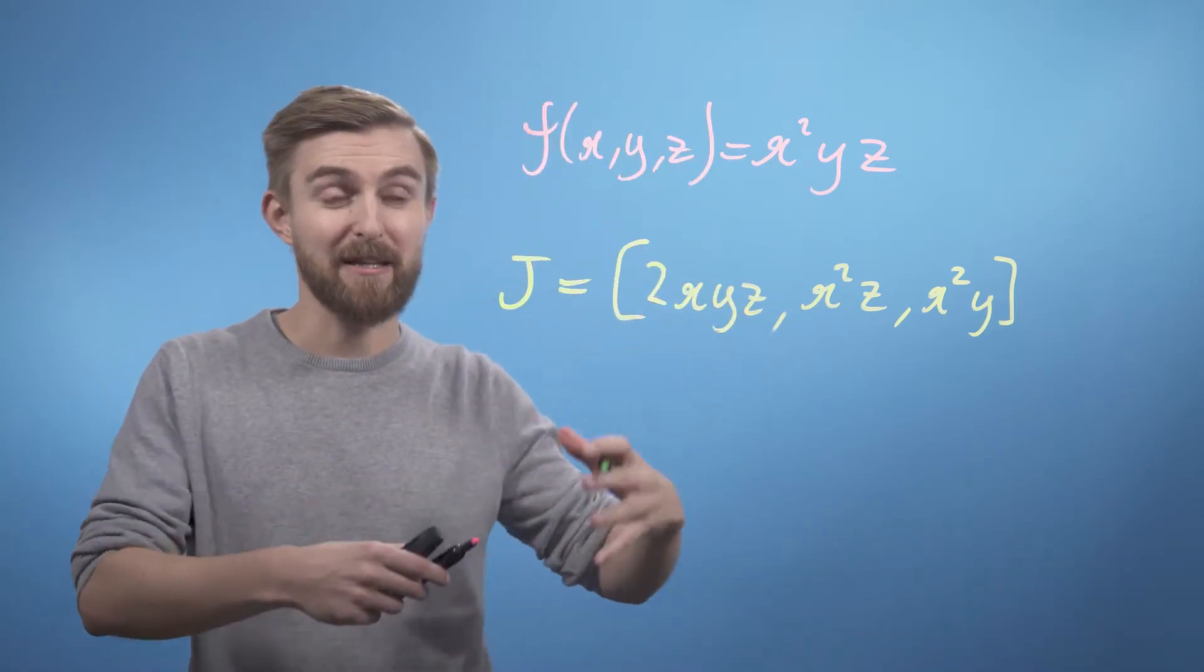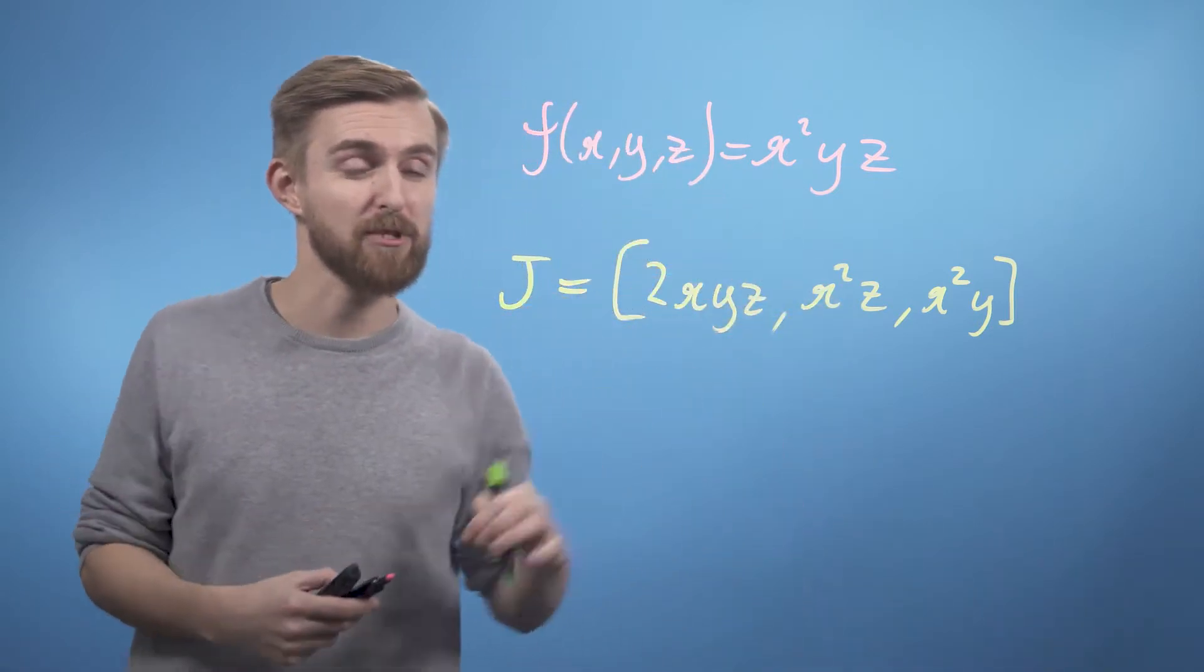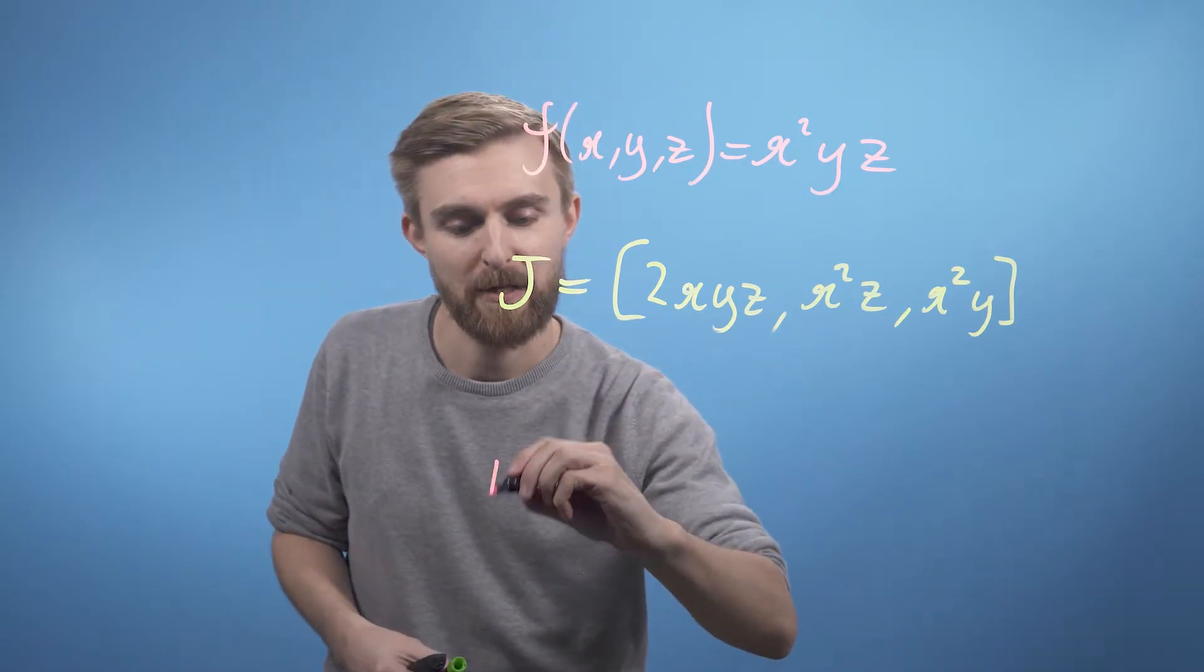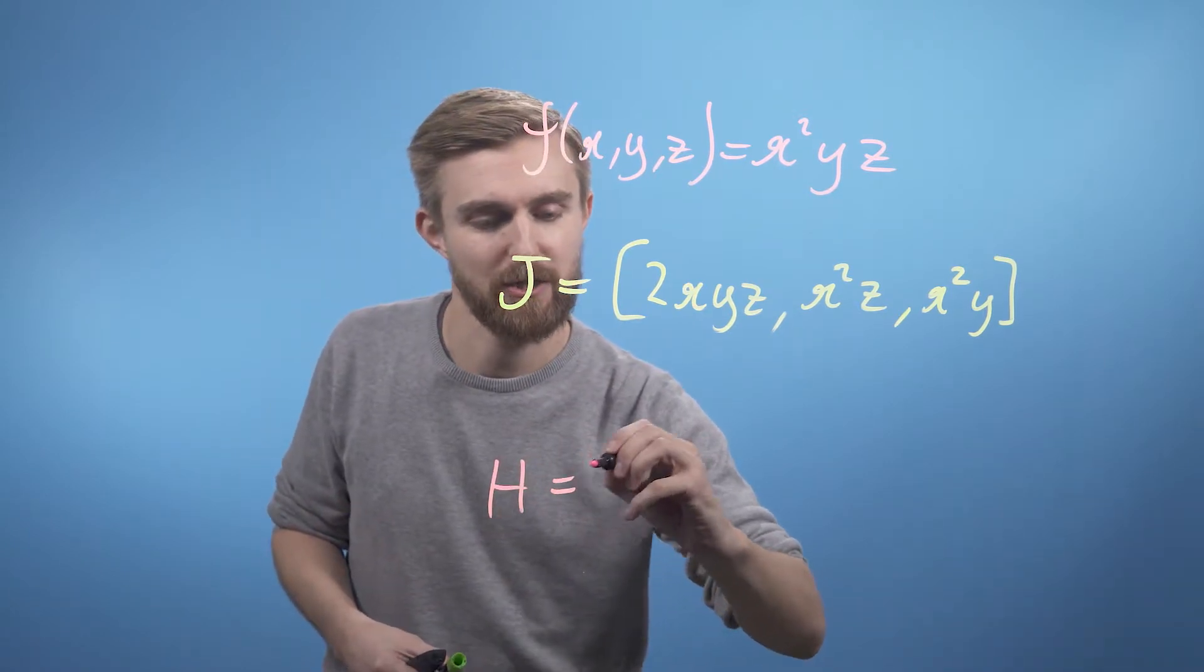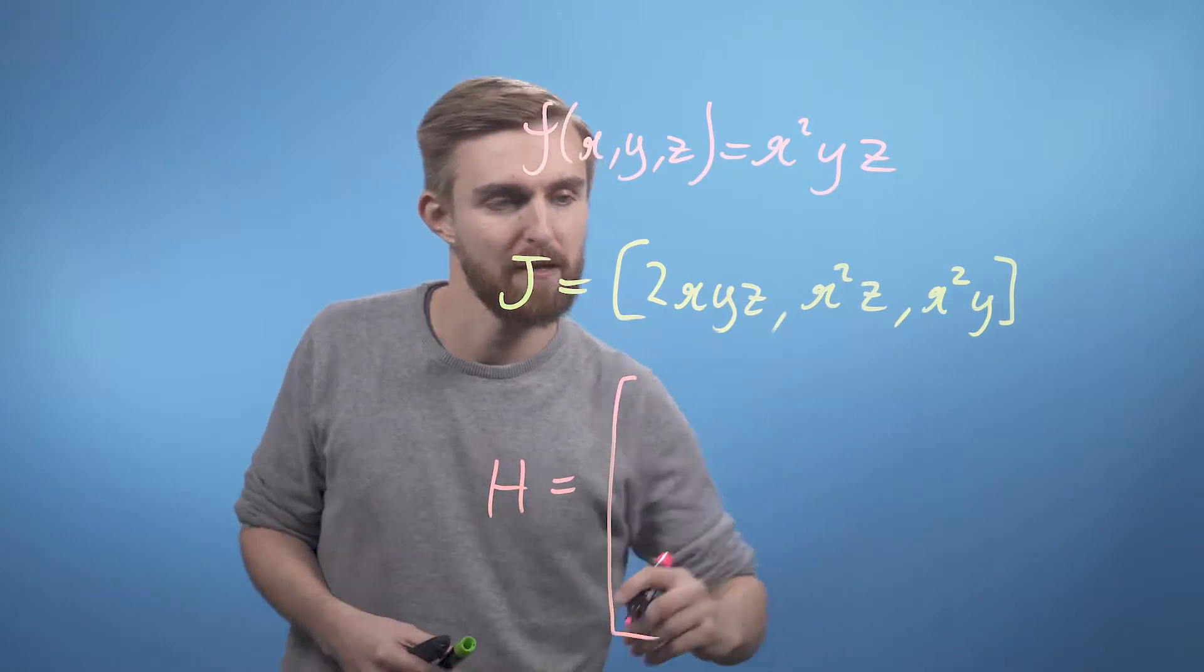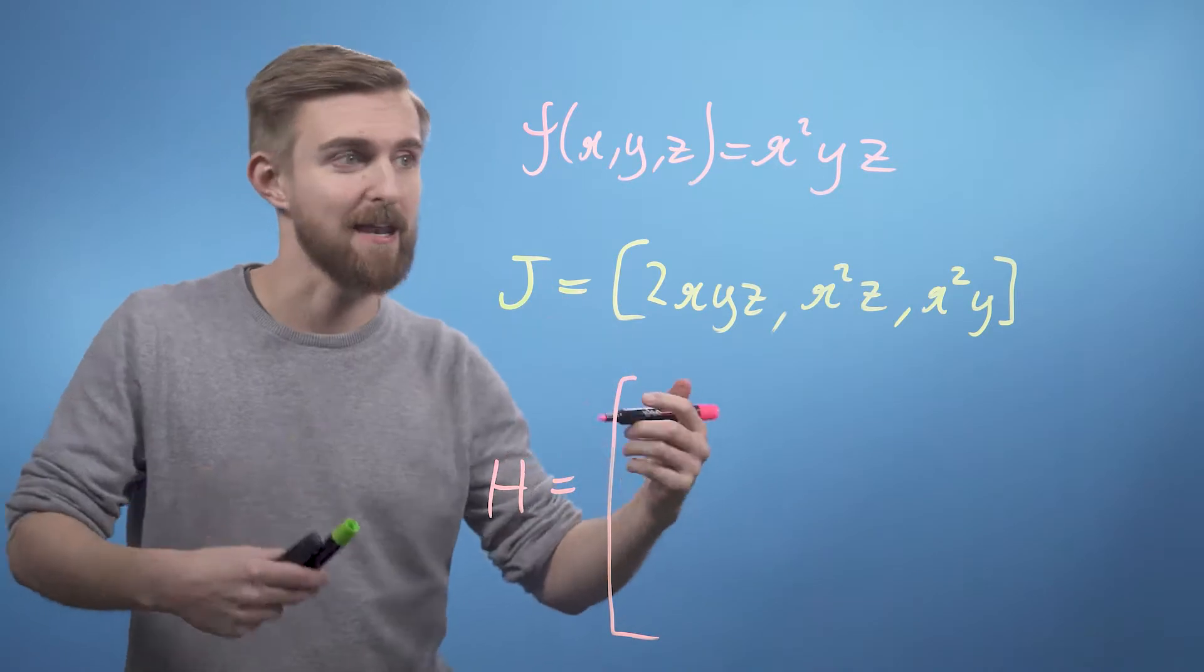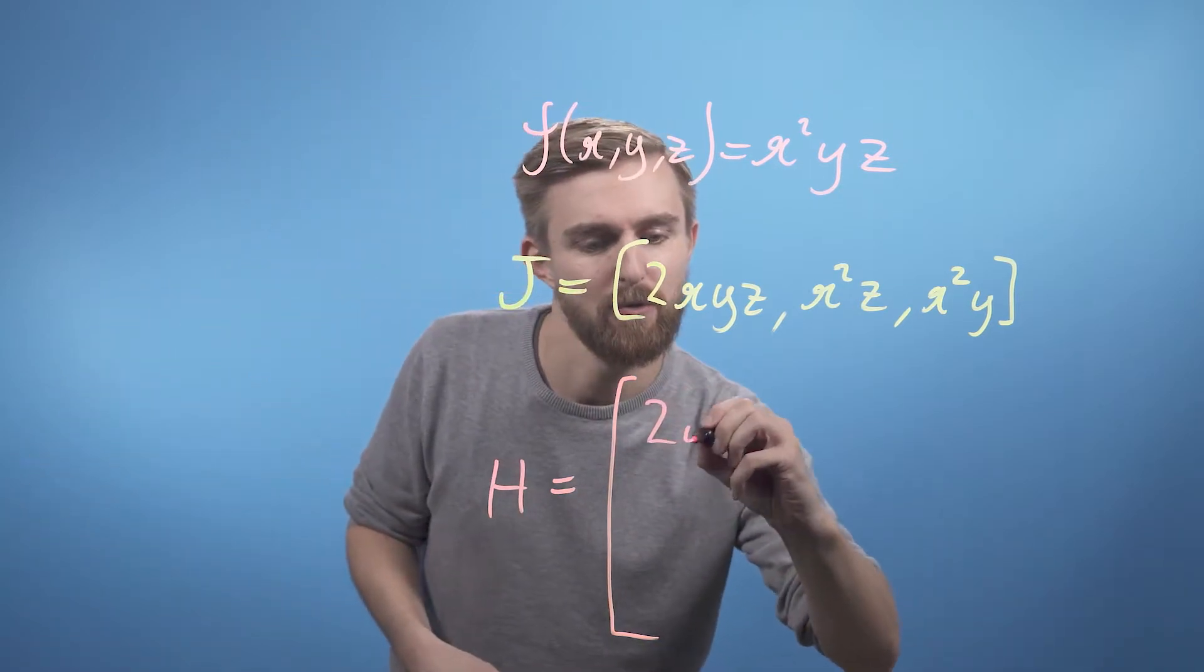Now using this, we can then think about differentiating again with respect to each of the variables, which will then give us our Hessian matrix. So H is just going to equal, and we'll put a big bracket here. So, we want to take this thing and differentiate it with respect to x again. So we're going to get 2yz.